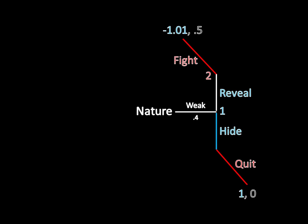What about the weak type? If the weak type sticks with his equilibrium strategy, he's going to hide and Player 2 is going to quit. He'll get a payoff of 1 for that. If he deviates to revealing, Player 2 fights and he receives a payoff of negative 1.01. That's a lot worse than sticking with his equilibrium strategy. So again, we have a case where a type is satisfied with the strategy — he doesn't have a profitable deviation either.